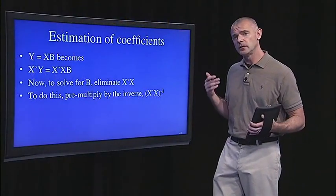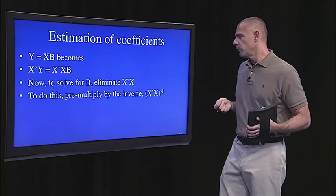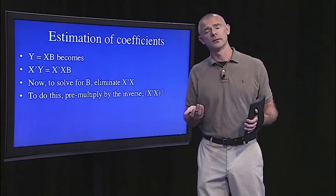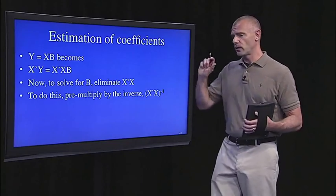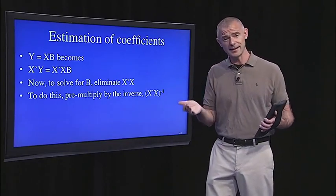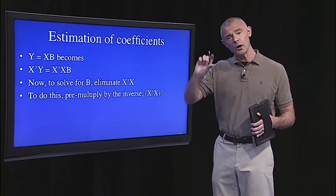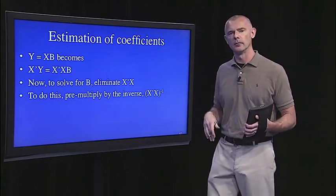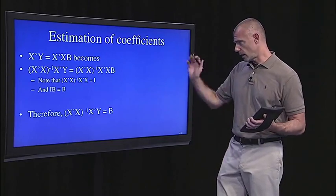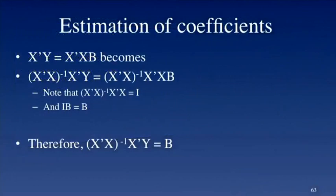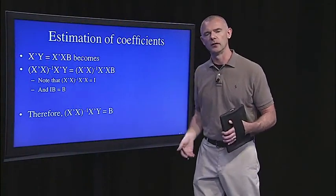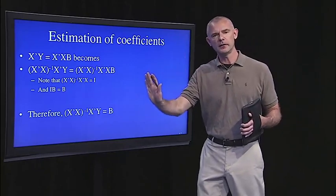Now to solve for B, all we have to do is eliminate X transpose X. That's actually pretty easy because we can pre-multiply by its inverse. Now that it's square and symmetric, it has an inverse. And remember that multiplying a matrix by its inverse gives you the identity matrix, which is like 1. So it eliminates that term from that side of the equation. X transpose times Y equals X transpose times XB becomes this longer formula. But we can just wipe out everything on the right side of the equation. The identity matrix times another matrix just returns that matrix, so I times B equals B. So now we've isolated B.